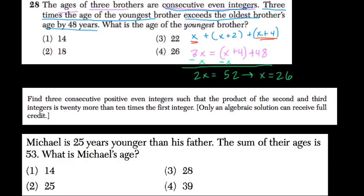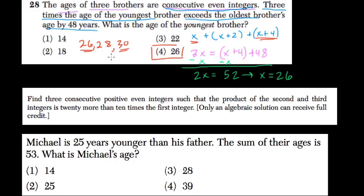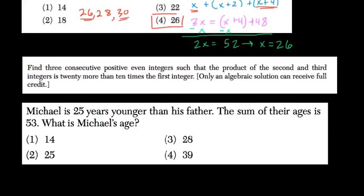So x equals 26 is the age of the youngest brother. You can test this out — the three brothers' ages would be 26, 28, and 30. And 3 times 26: 3 times 20 is 60, 3 times 6 is 18, that's 78. And that's 48 years more than 30. So this algebraic approach will help you solve these problems.